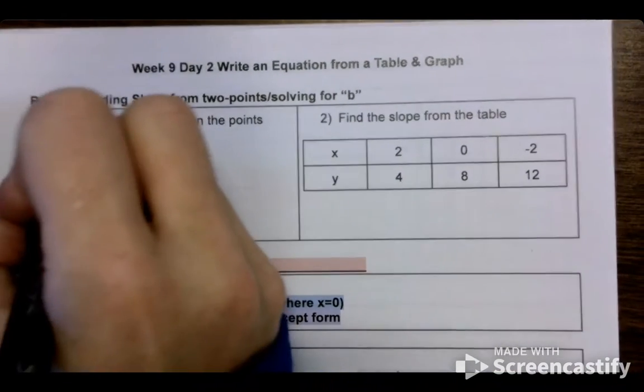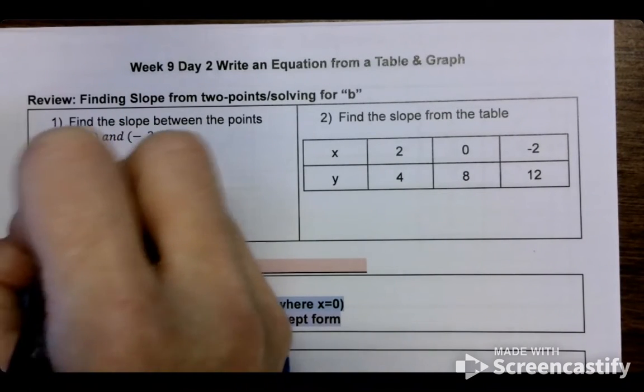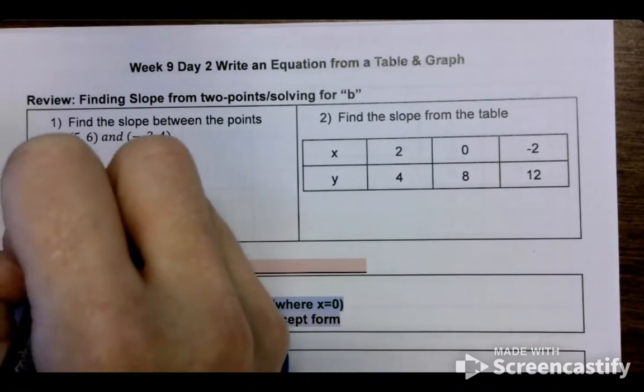Welcome back. So if we do the table, we would have 5, 6, negative 3, 4. This is going down 2. This is going down 8.